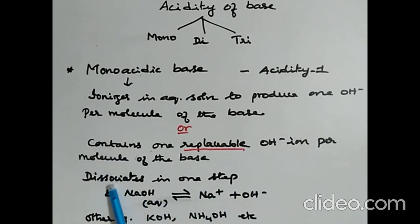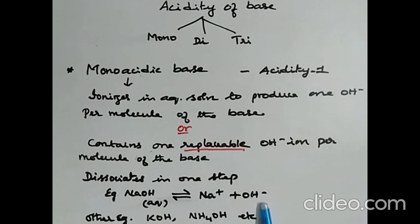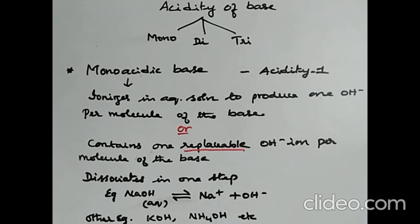Monoacidic base: acidity is 1 — it ionizes in aqueous solution to produce 1 hydroxyl ion per molecule, or contains 1 replaceable hydroxyl ion per molecule. It dissociates in 1 step. Example: sodium hydroxide dissociates to produce Na+ and OH− ions. Other examples for monoacidic bases are KOH and NH4OH.